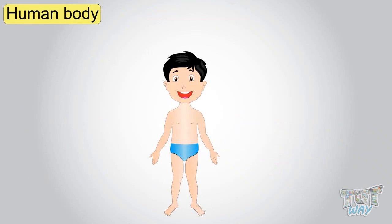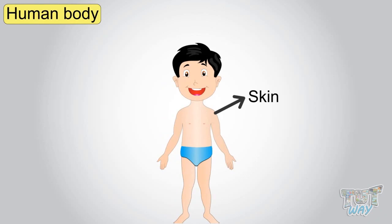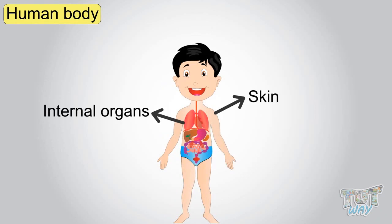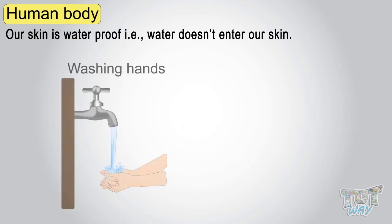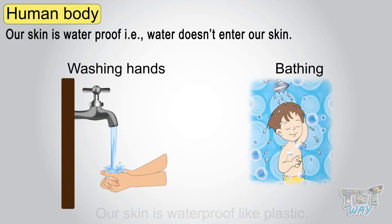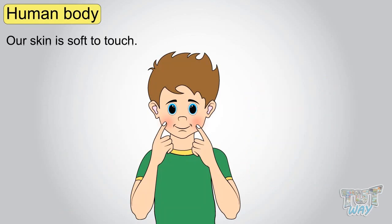Now let's learn about the human body, which is an amazing natural structure. Our skin holds together all our internal organs. Our skin is waterproof — water does not enter our skin. When you wash your hands or have a bath, our skin stays waterproof, like plastic. Our skin is also soft to touch.